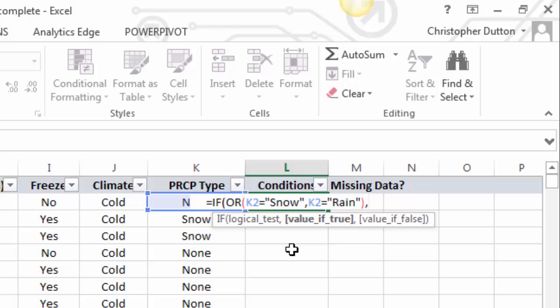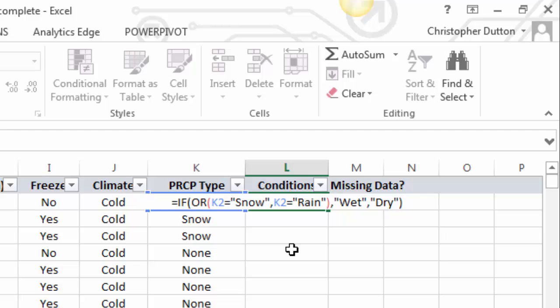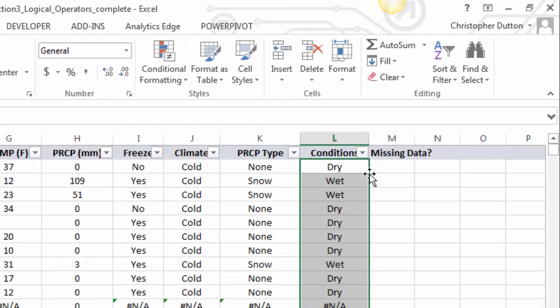Close out my OR statement, comma over. Remember, if either of these are true, what value do I want to return? That value is wet, and then again, if none of those are true, my value of false is going to be dry. Put it in quotes, close it off, hit enter, and apply that down just like I did in the last example.